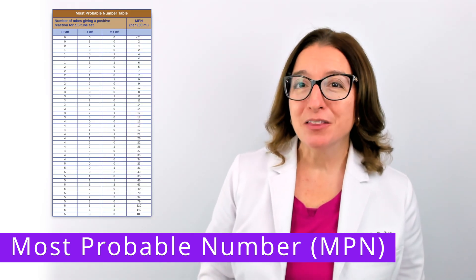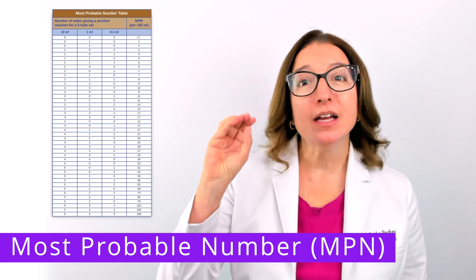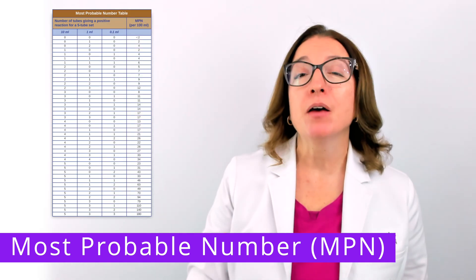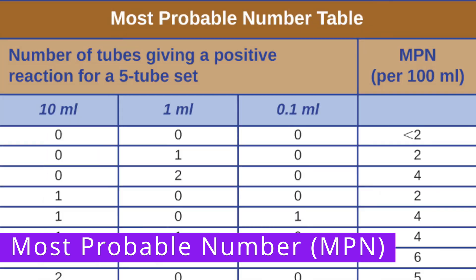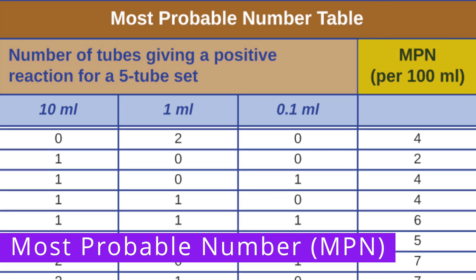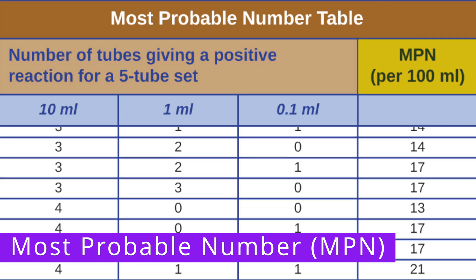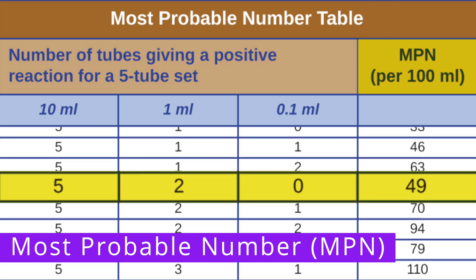Next, we take those numbers — 5, 2, and 0 — and look them up in a special MPN table, which provides an estimate of the number of bacteria present in 100 milliliters of water. If we look up 5, 2, and 0, we see that this equals approximately 49 bacteria present in 100 milliliters of water.